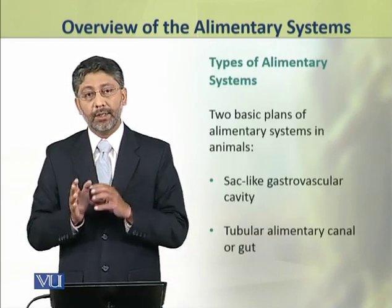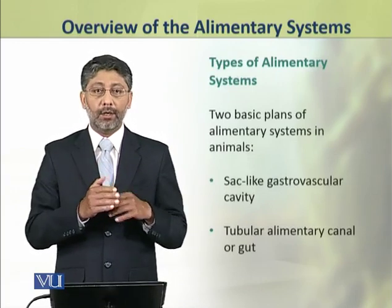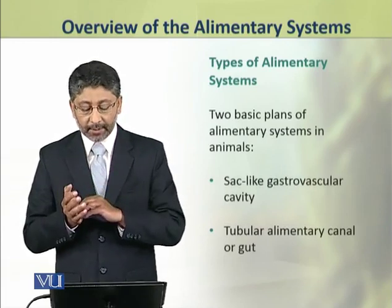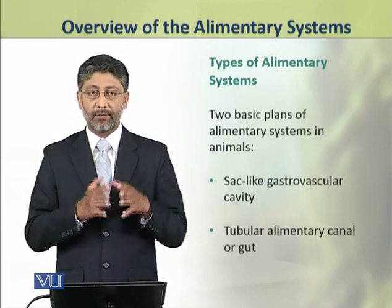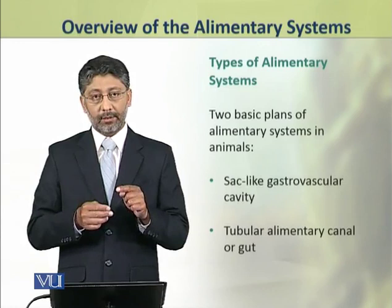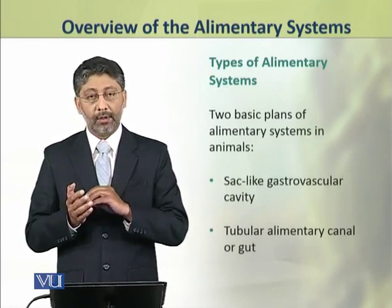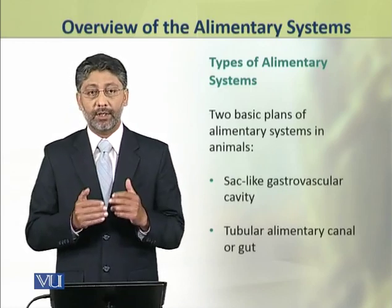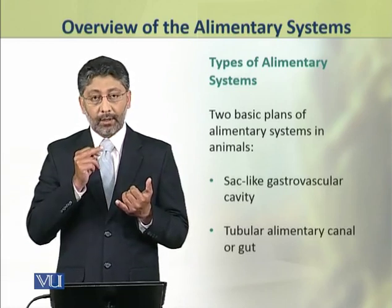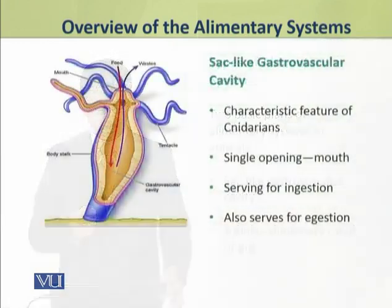There are two major types of alimentary systems observed in the animal kingdom. The first is a simple sac-like gastro-vascular cavity, while the second type, found in most animals, is a tubular alimentary canal, also known as the gut.